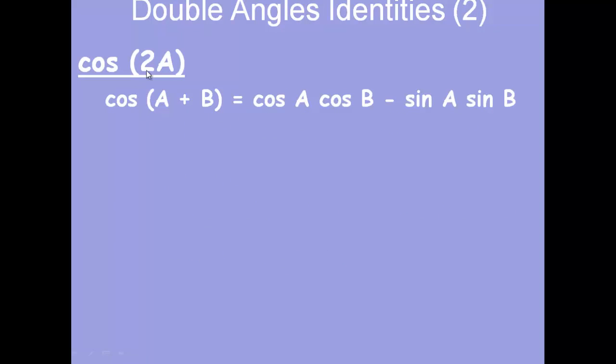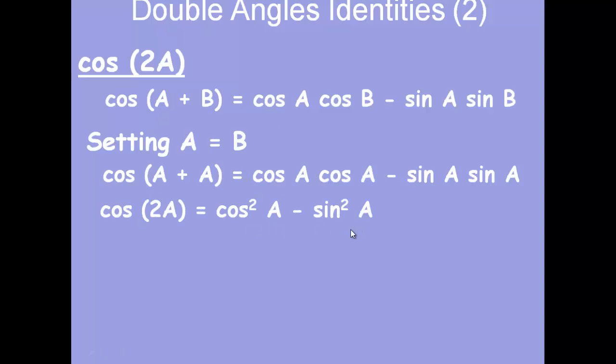Similar process for cos, set A equals B. This time we get cos A cos A, which is of course cos squared A minus sin squared A. A really useful variation on this formula is the fact that, because of our identity sin squared plus cos squared equals 1, we can rearrange to get the double angle for cos in terms of just cos or just sin.